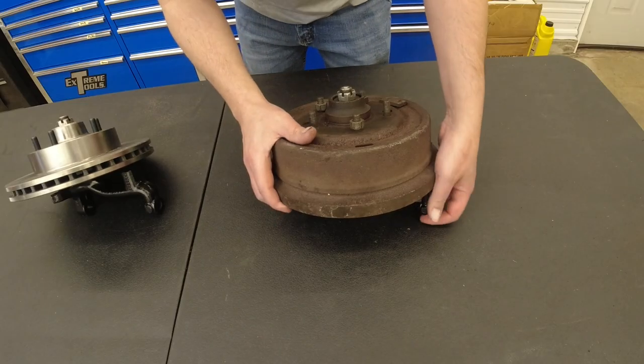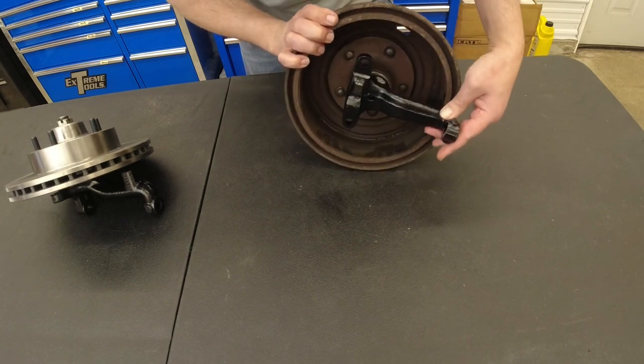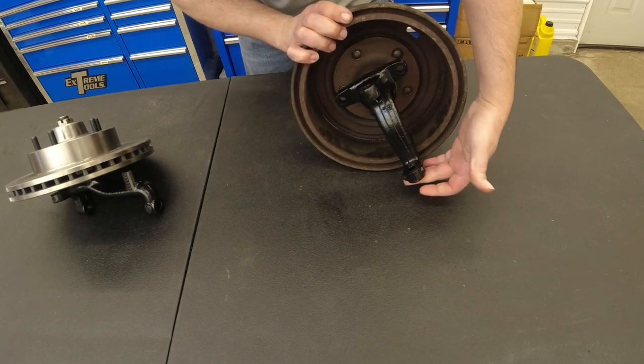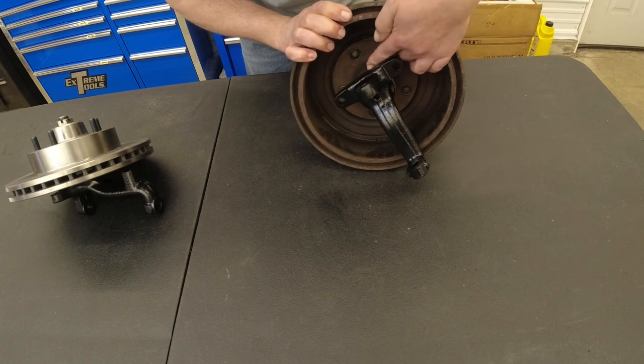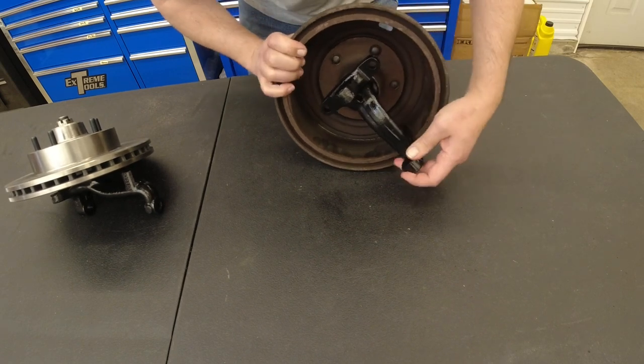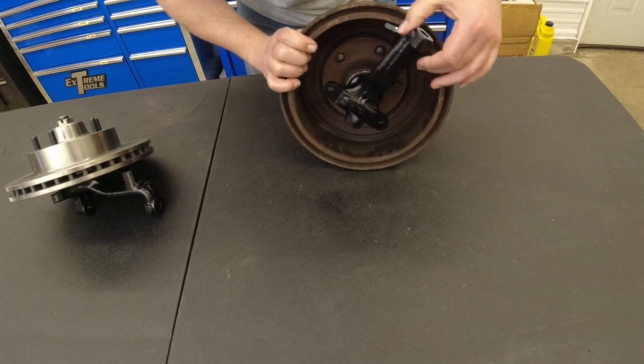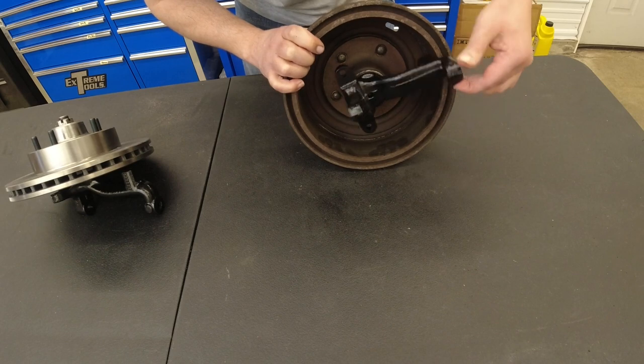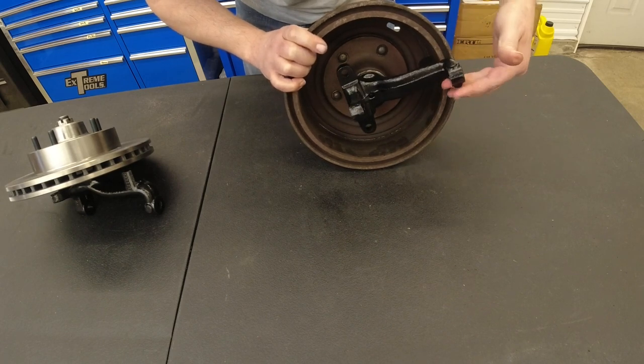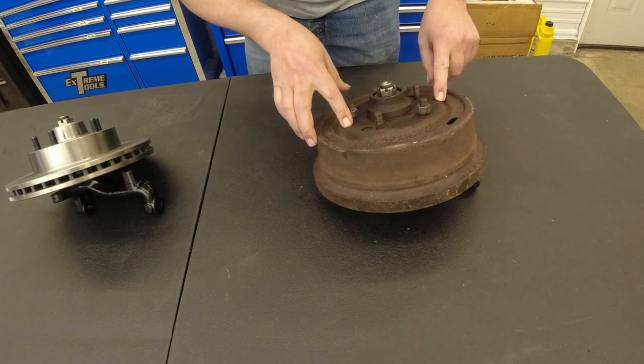All right, here we have an original 1967 spindle off of our 40,000 mile car with the original hub, original bearings, and original drum. All bolted together with pretty much zero end play. It's actually a little too tight for street, but it's going to be good for our measurements. So drum was bolted on tight.